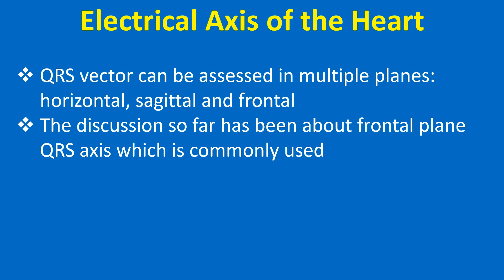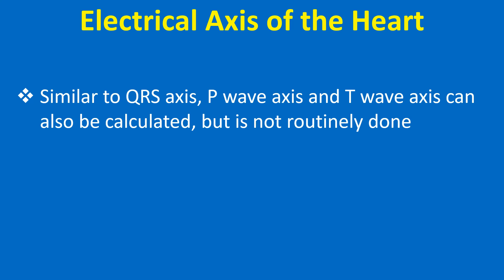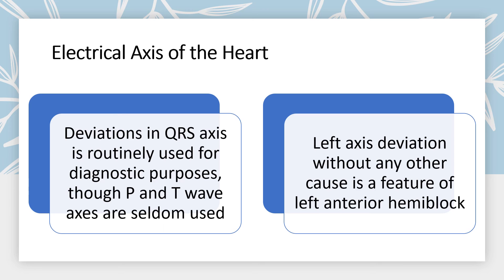The QRS vector can be assessed in multiple planes: horizontal, sagittal, and frontal. The discussion so far has been about frontal plane QRS axis, which is the most commonly used. The T wave vector can also be assessed; the relation between the T wave vector and the QRS vector is termed the ventricular gradient. Similar to QRS axis, P wave axis and T wave axis can also be calculated but are not routinely done. In modern computerized electrocardiographs that print ECGs on a full sheet, automatic graphical display of P, QRS, and T wave axis is common, with the measured values indicating the exact values computed by the program.